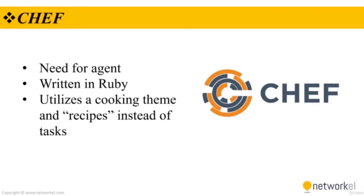Chef is another popular tool for network automation, and the setup is a little more involved than Ansible. There is a master server, and agents are installed on managed nodes. A Chef installation also needs a workstation to control the master. Once an agent has been installed on the managed device, the nodes authenticate to the master using certificates.